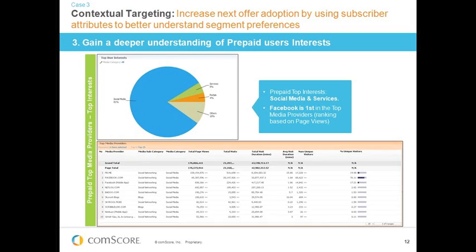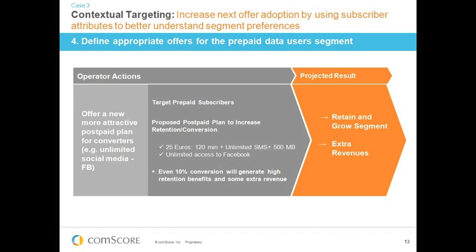The final piece is a psychographic understanding of the prepaid subscriber base — their interest areas. In this instance it's heavily dominated by social media use: 81% or so of page views are delivered in the social media category, and drilling down further, most of those are delivered through Facebook. So our prepaid user base are heavy Facebook users, really into their social media. This gives us all the pieces to define an offer with the best chance of delivering a high conversion rate for converting prepaid to postpaid.